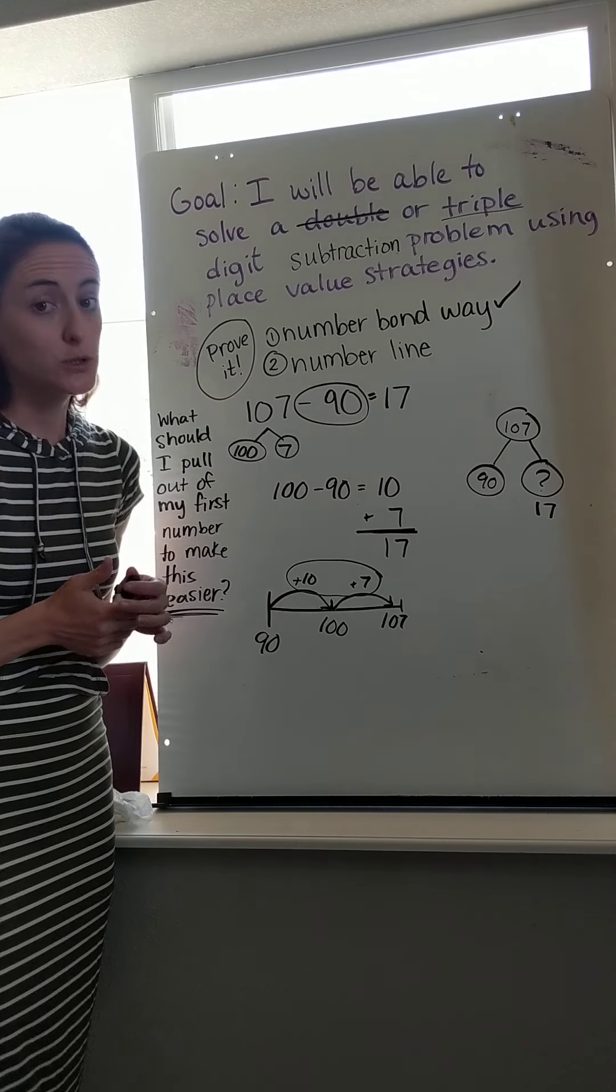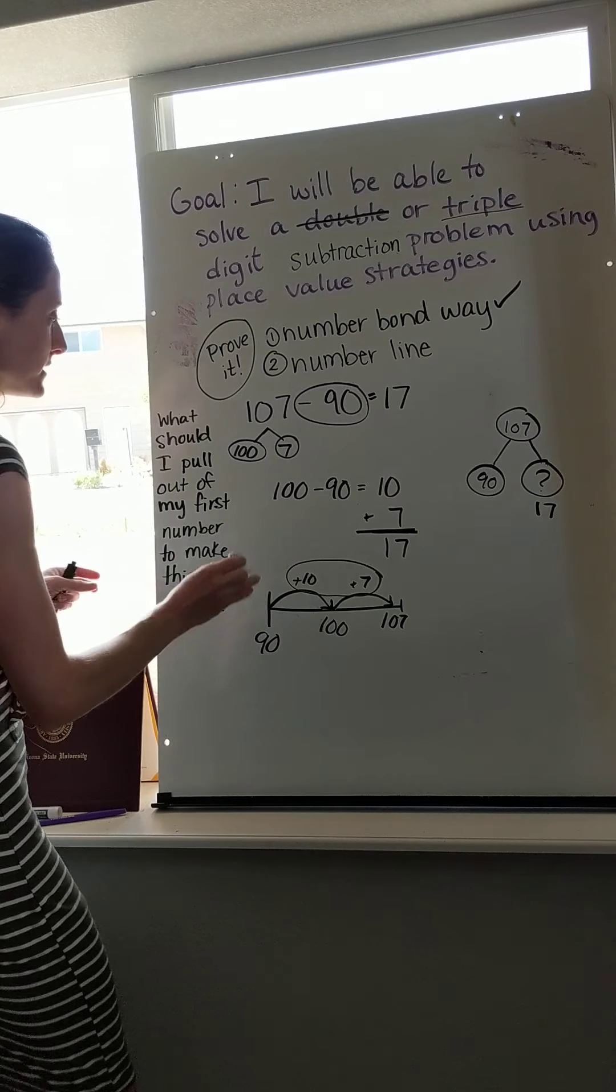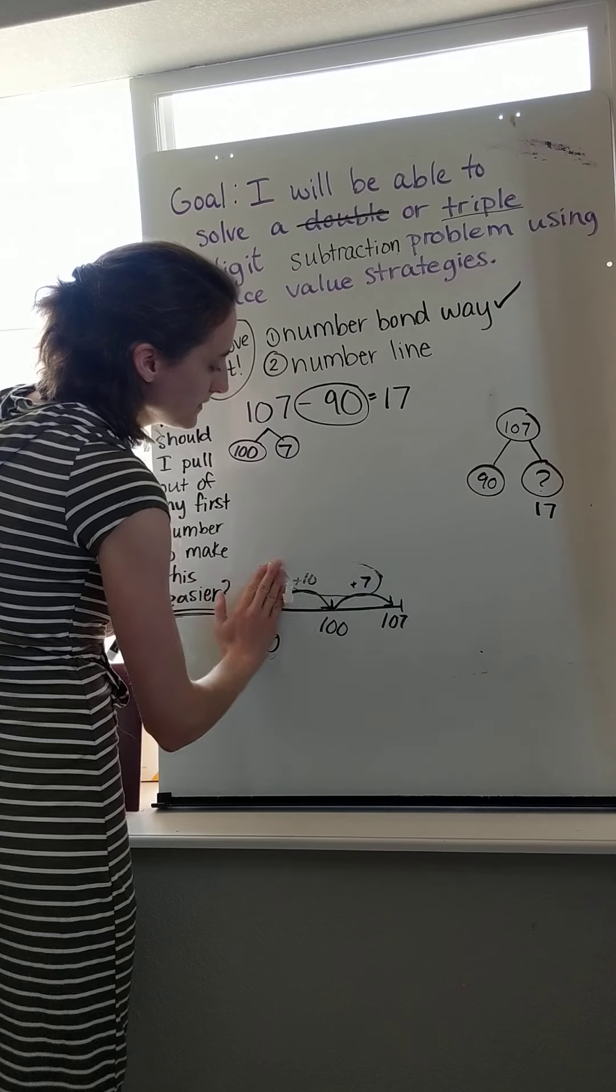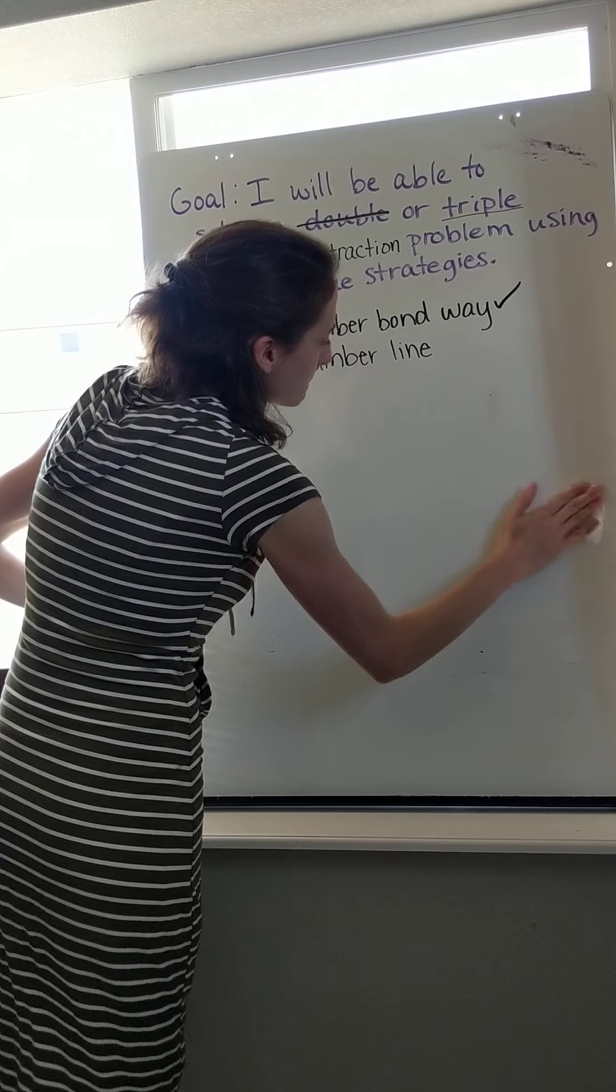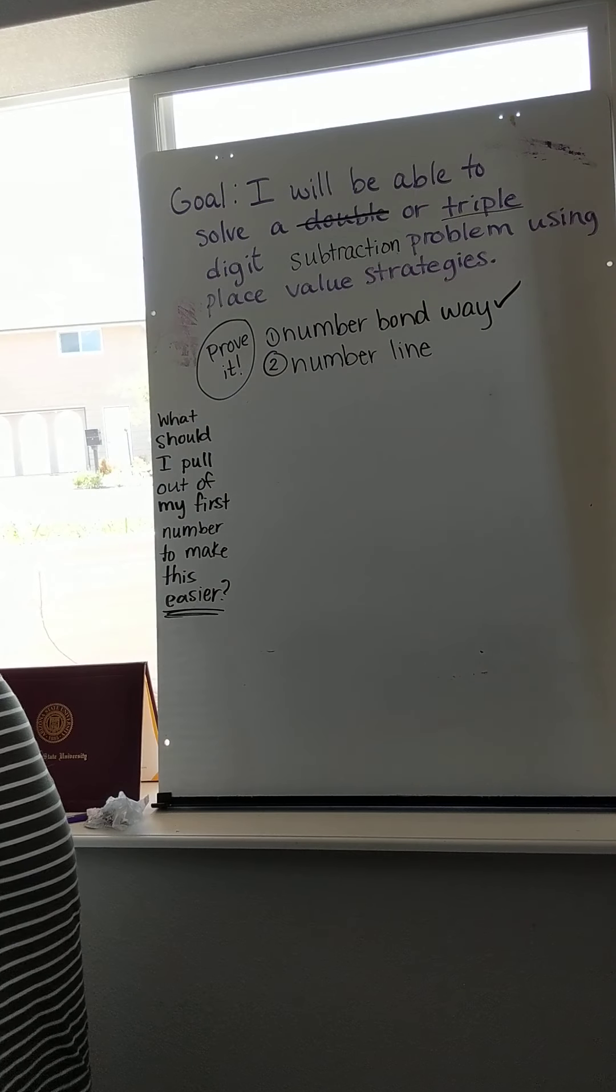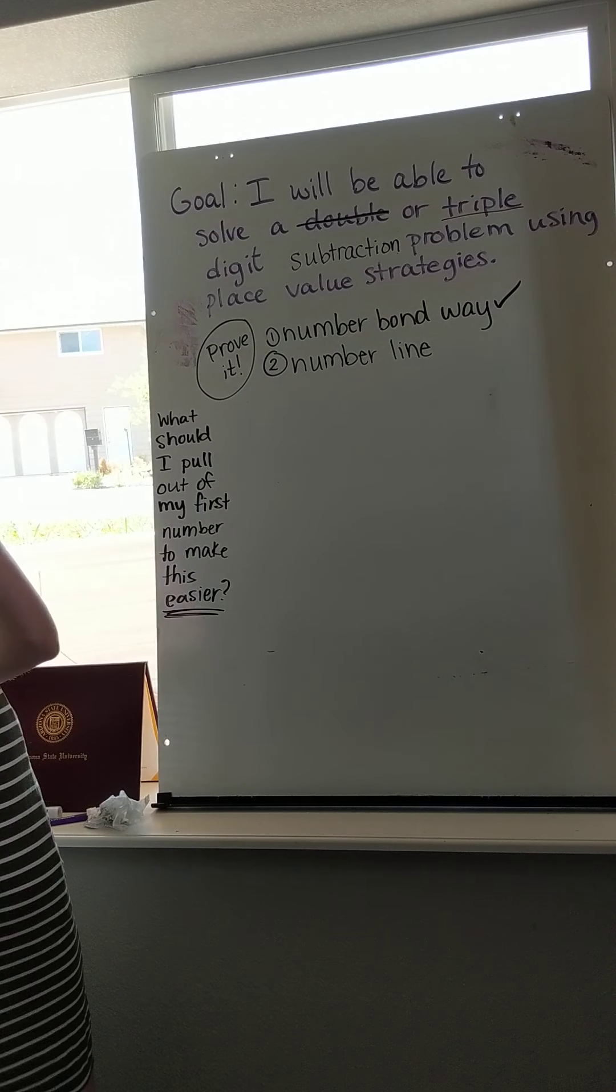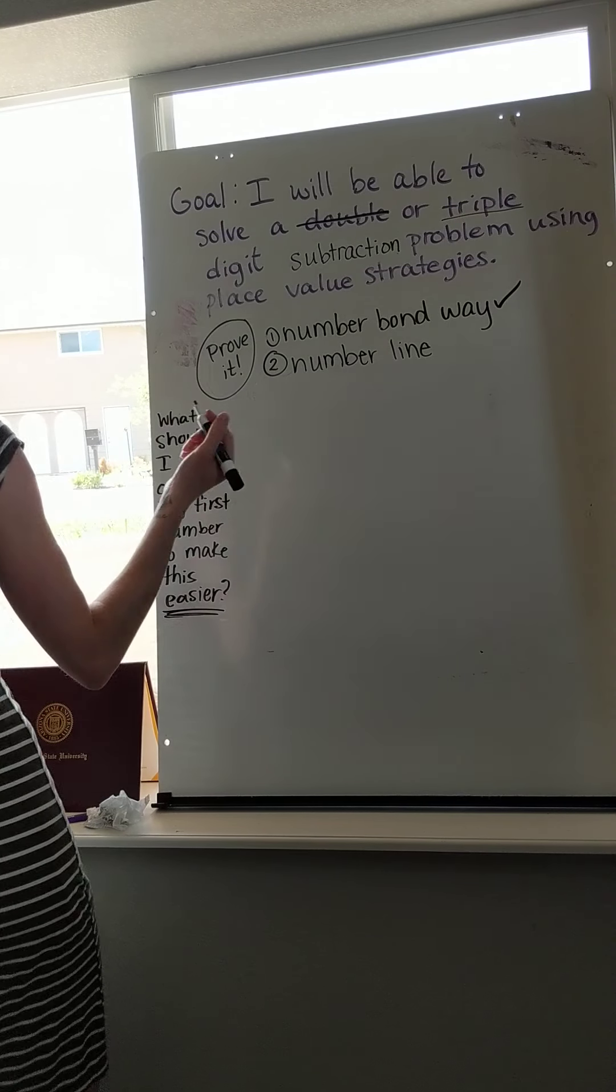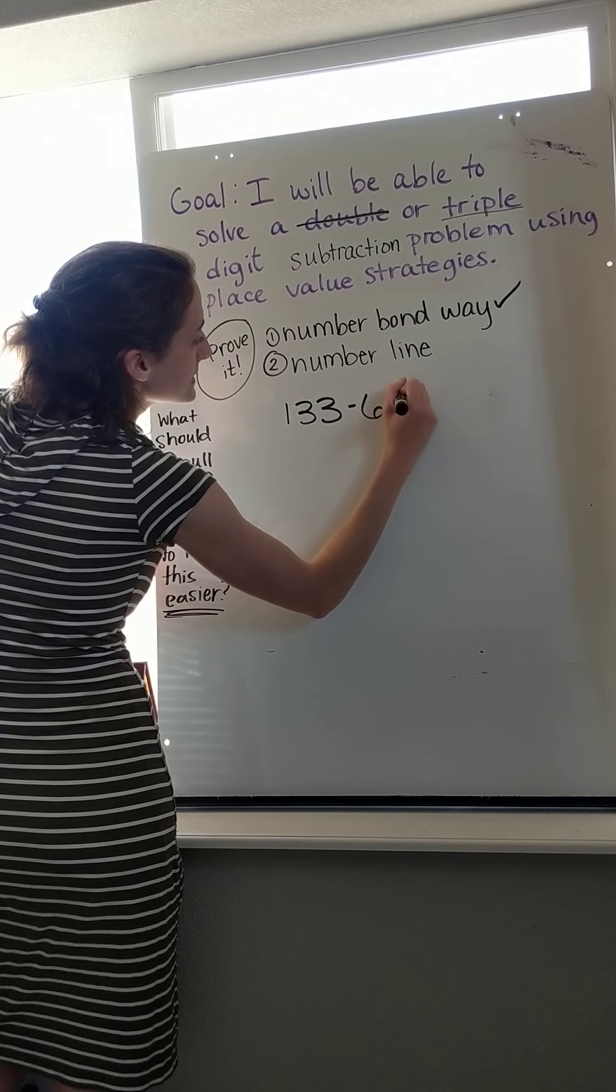And I'm sure because I tried two different strategies, so I proved it to myself. We're going to try another one that's a little bit more complicated than that, so that you're ready for your practice today. We'll try 133 minus 69.